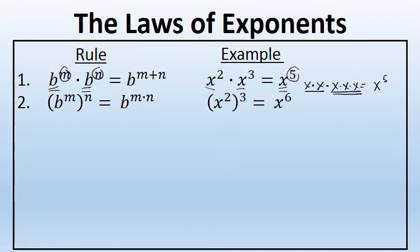On the other hand, when you're raising a power to a power — for example, b to the power of m raised to the nth power — the exponents are multiplied. For example, x squared to the power of 3 is equal to x to the power of 2 times 3, which is 6. When you're raising a power to a power, you multiply the exponents. x squared to the third power is x to the sixth.